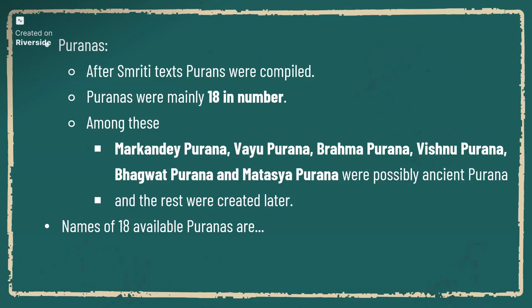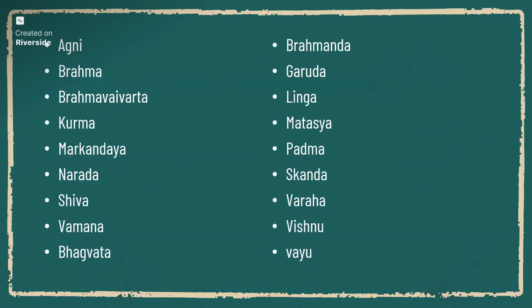The 18 Puranas include: Agni, Brahma, Brahmavaivarta, Padma, Markandaya, Narada, Shiva, Vamana, Bhagavata, Brahmanda, Garuda, Linga, Matsya, Padma, Skanda, Varaha, Vishnu, and Vayu. All these contain stories whose historical truth is uncertain — that is why they are called Puranas.